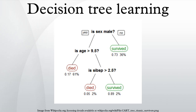Amongst other data mining methods, decision trees have various advantages. They are simple to understand and interpret — people are able to understand decision tree models after a brief explanation. They require little data preparation, as other techniques often require data normalization, dummy variables, and removal of blank values. They are able to handle both numerical and categorical data, whereas other techniques are usually specialized for only one type. They use a white box model, where explanations for conditions are easily explained by Boolean logic. It is also possible to validate a model using statistical tests. Decision trees are robust, performing well even if assumptions are somewhat violated, and they perform well with large data sets using standard computing resources in reasonable time.